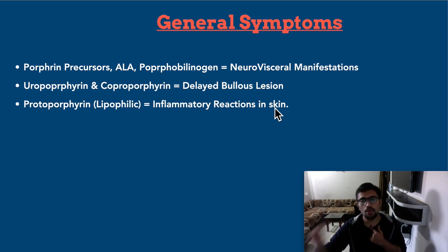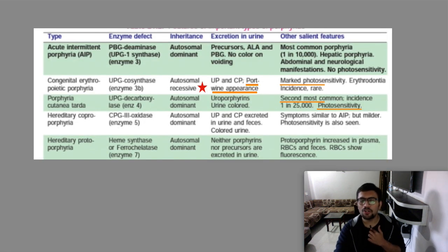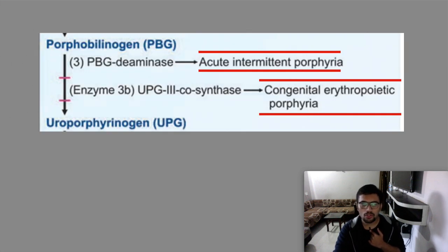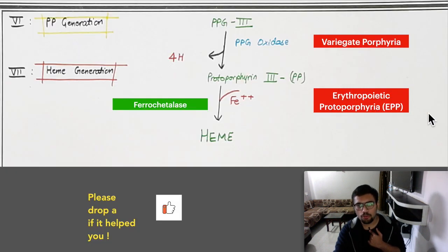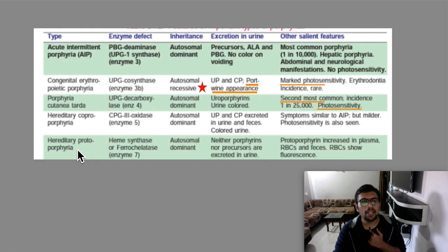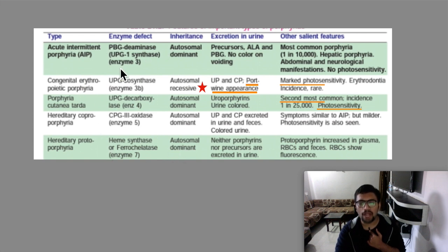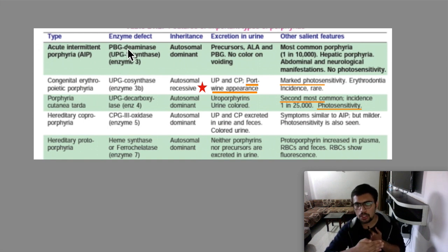To summarize the types simply: acute intermittent porphyria and congenital erythropoietic porphyria were together in early steps. Then you had PCT as the second C, hereditary coproporphyria as the third C, and then variegate porphyria and erythropoietic protoporphyria. In some books, erythropoietic protoporphyria is written as hereditary protoporphyria — don't worry about that. What is important is ferrochelatase. All are autosomal dominant except congenital erythropoietic porphyria, which is autosomal recessive — remember this exception.